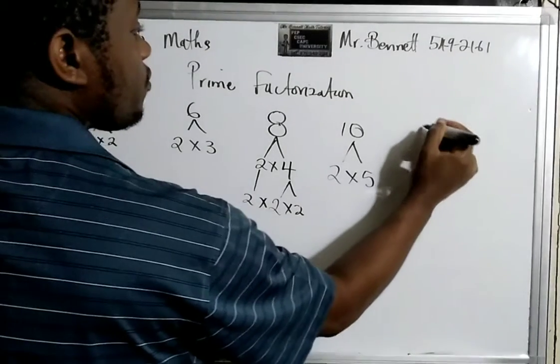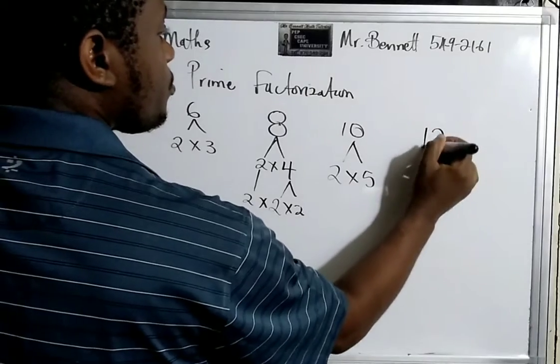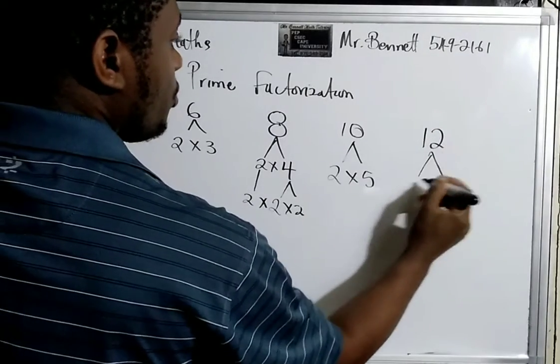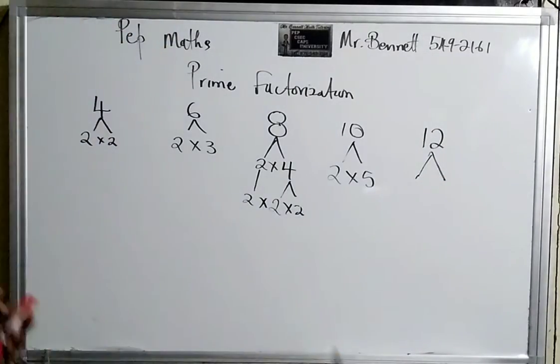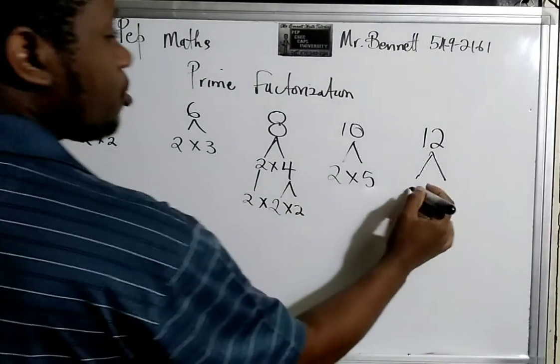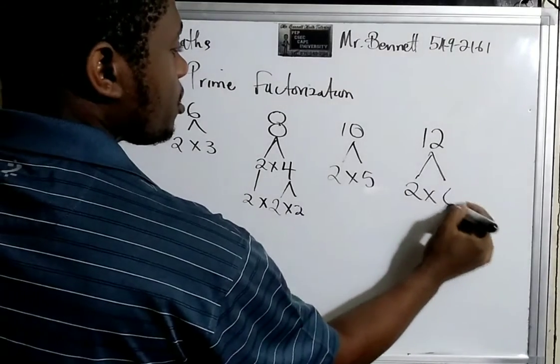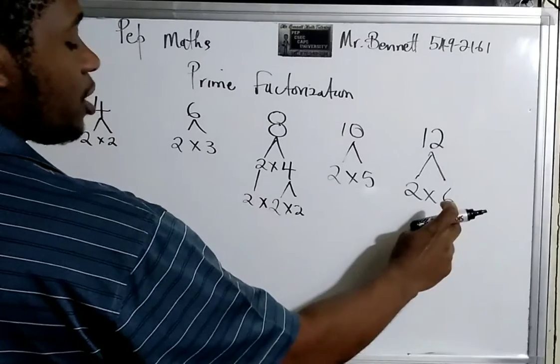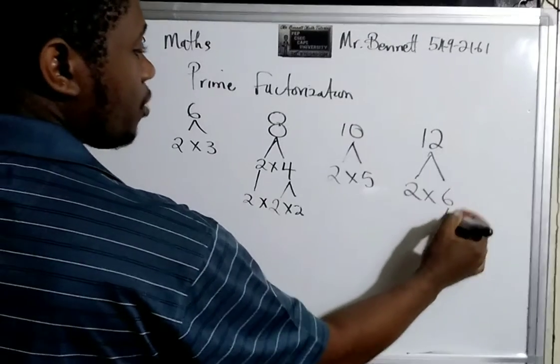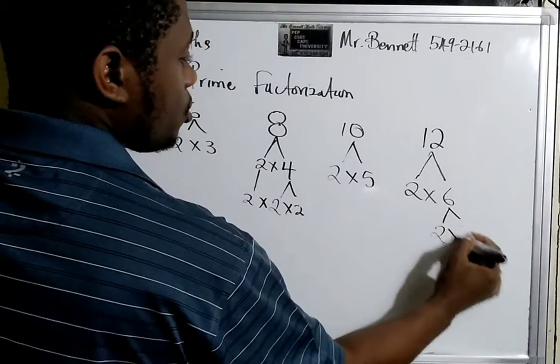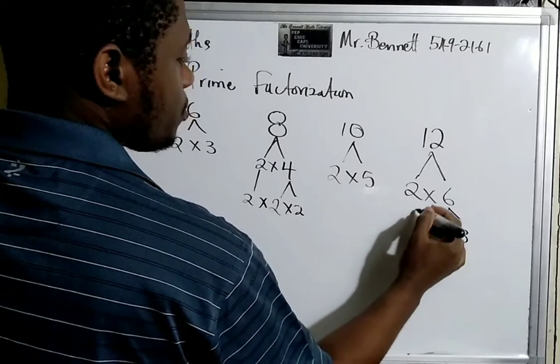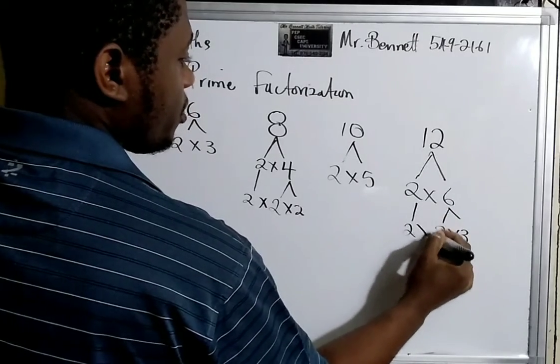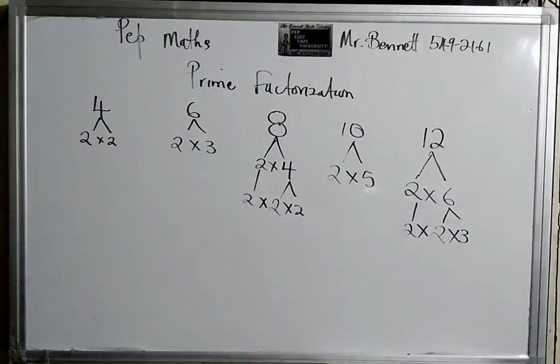Let us look at 12. We can either do three by four or two by six, it doesn't matter. Look at two by six. But six is not a prime number, so we have to break down six, so it needs to be two times three. I hope everyone's following. So the prime factorization of 12 would be two times two times three.